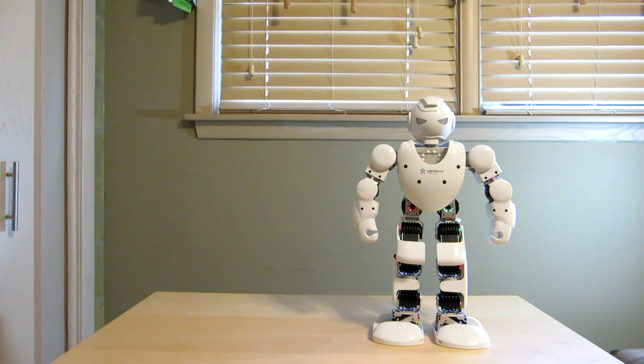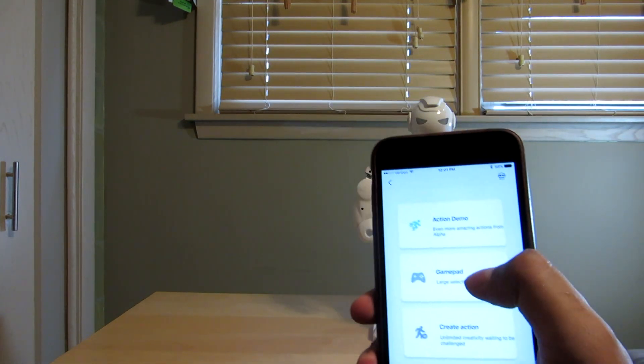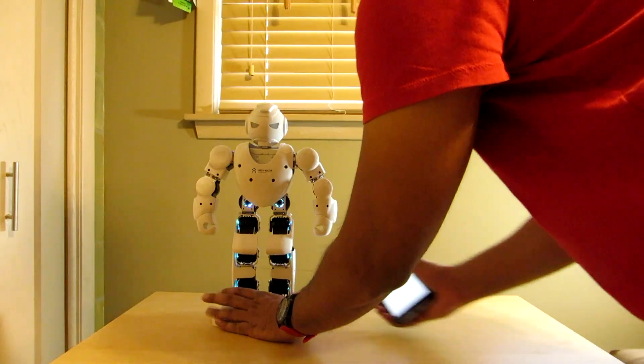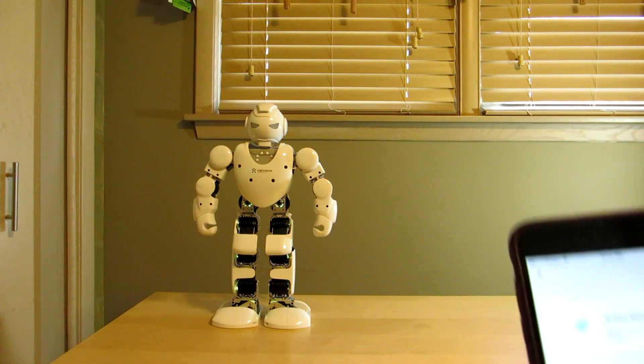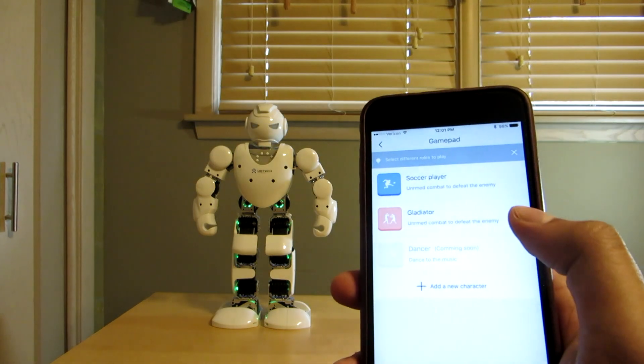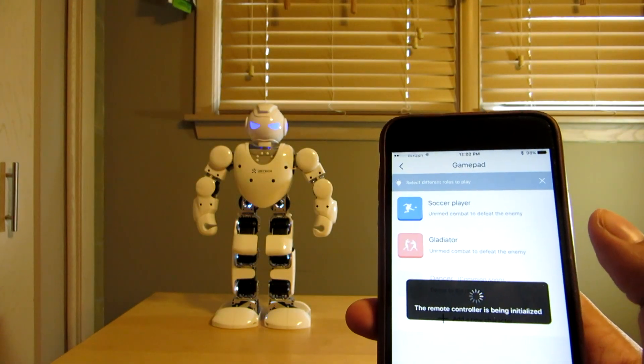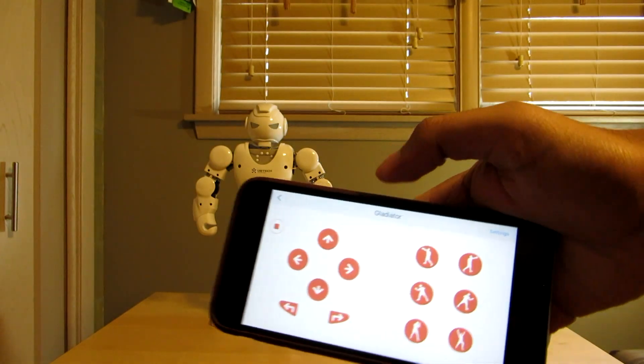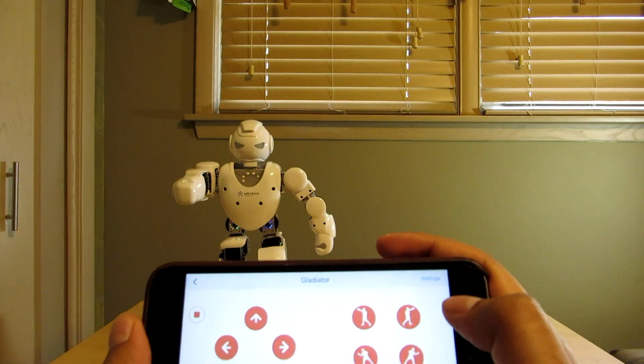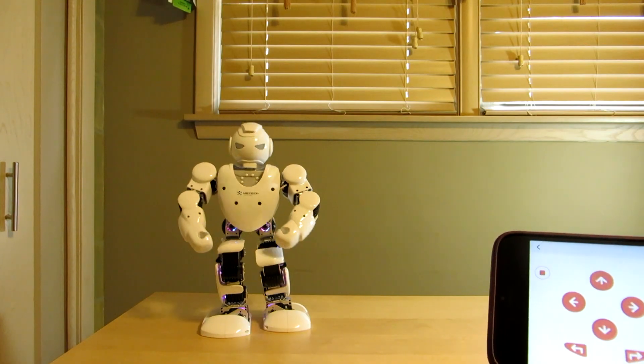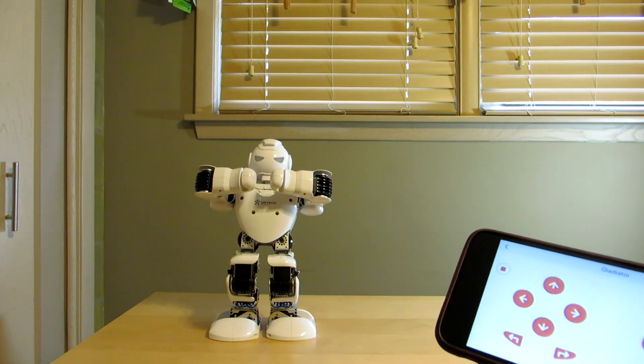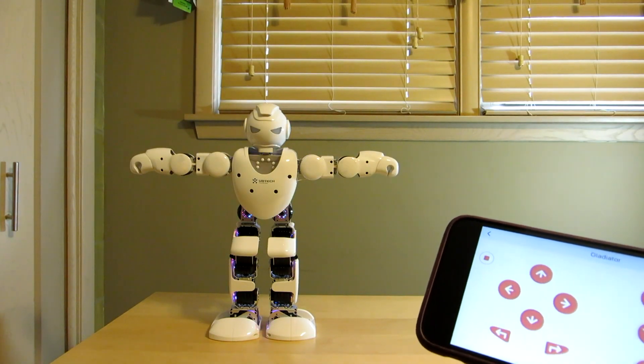So in the app, it does have a gamepad key as well. I'm kind of curious to see what that is. Let's click on gamepad. I prefer to have them on this side. Let's click gamepad here. Soccer player. Gladiator. Add a new character. Let's do Gladiator. It says the remote controller is being initialized. Cool! Okay. Let's do a punch. Let's do another punch. Let's make him go in the boxing state. Oh, that's block. Okay. Let's make him do a kick.